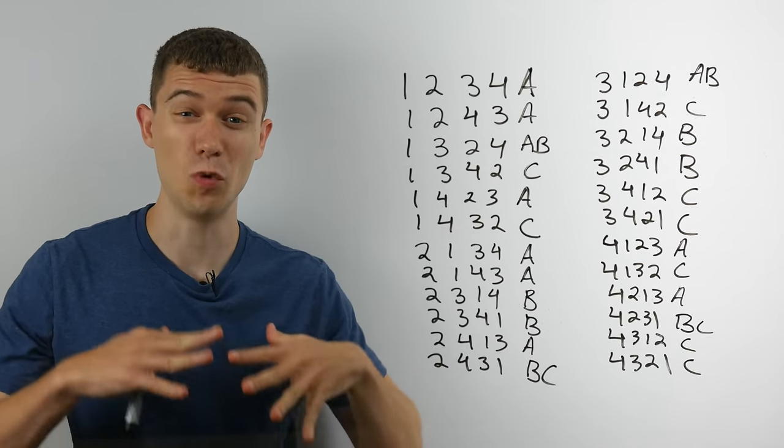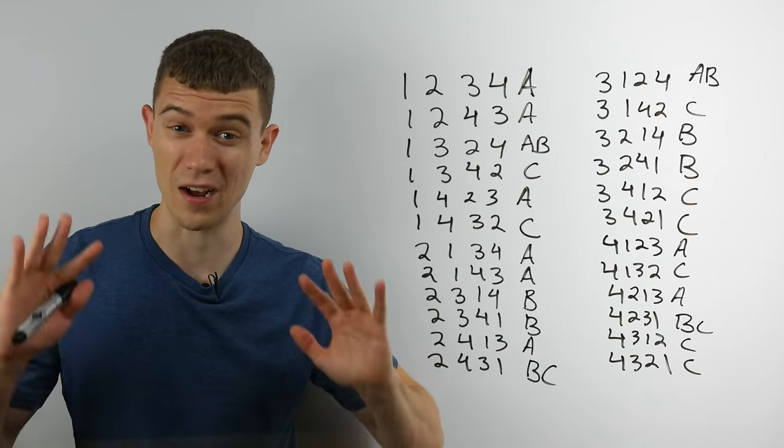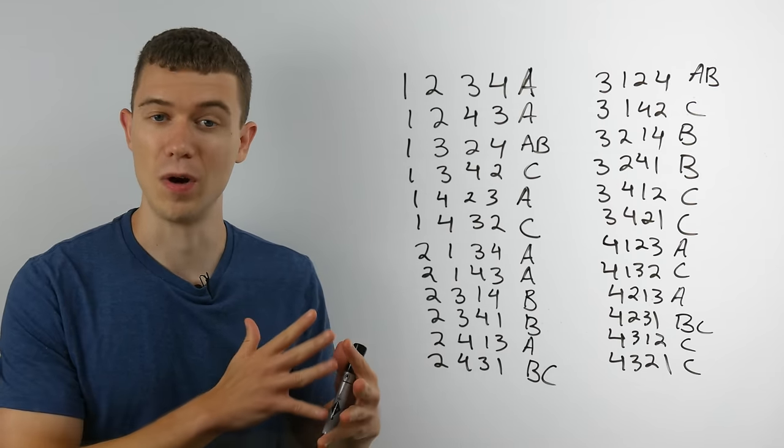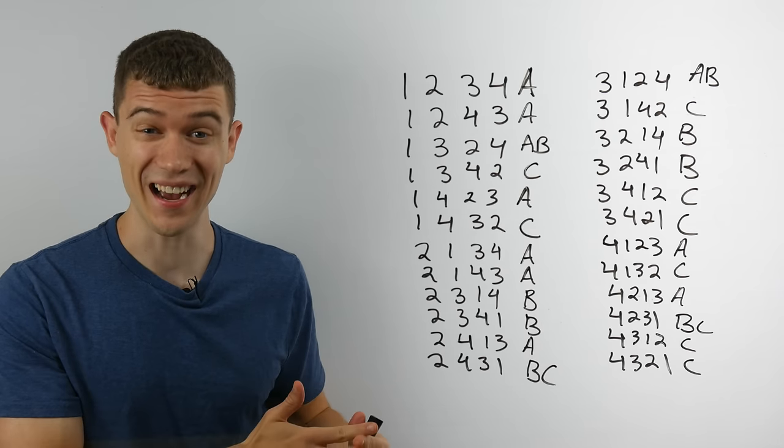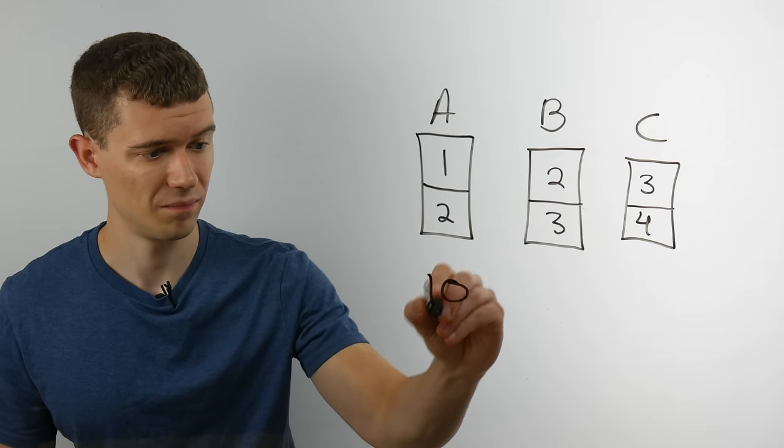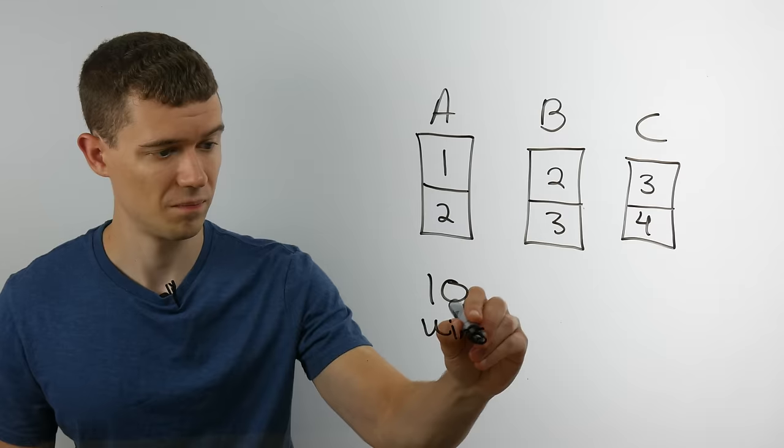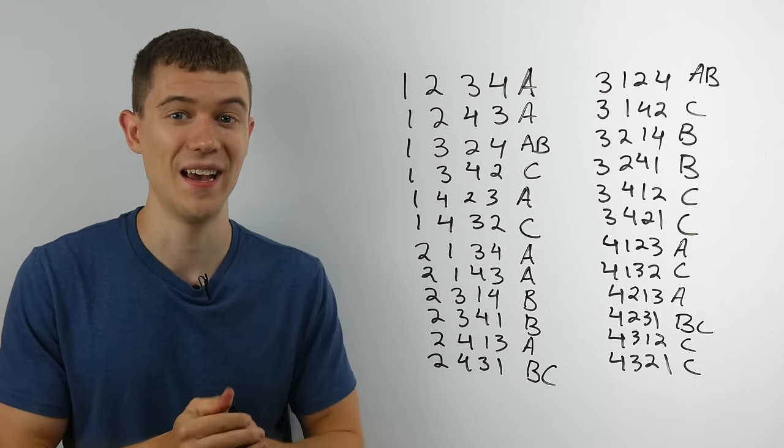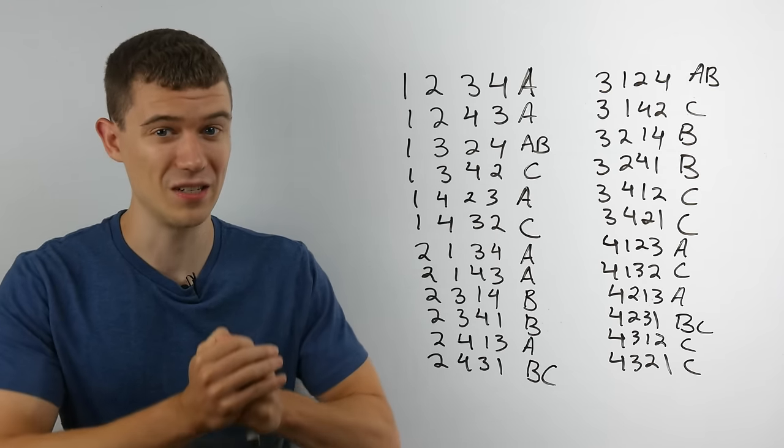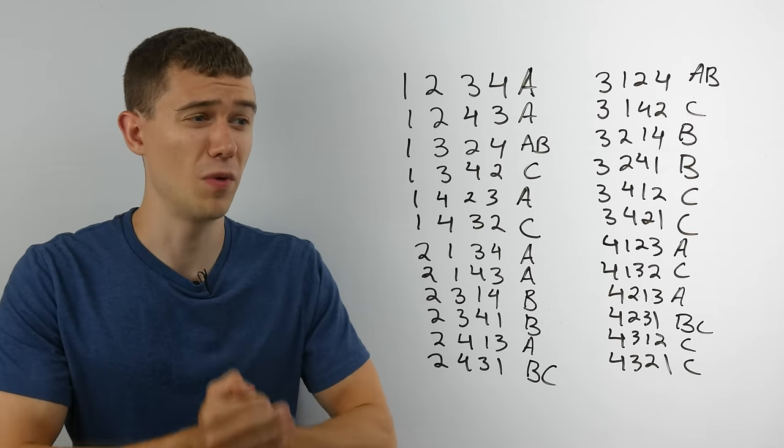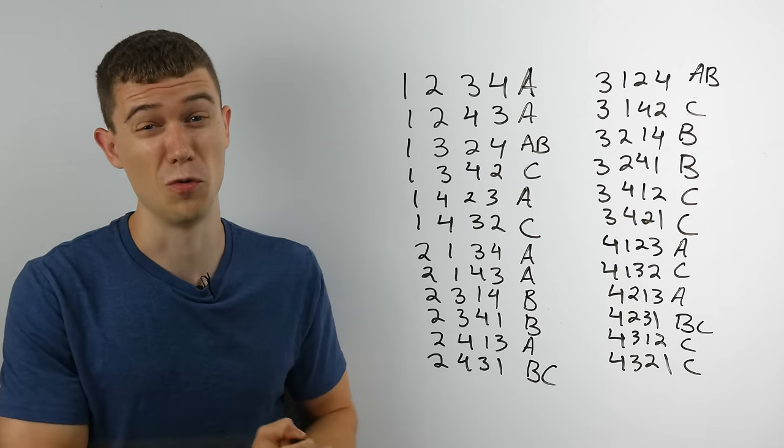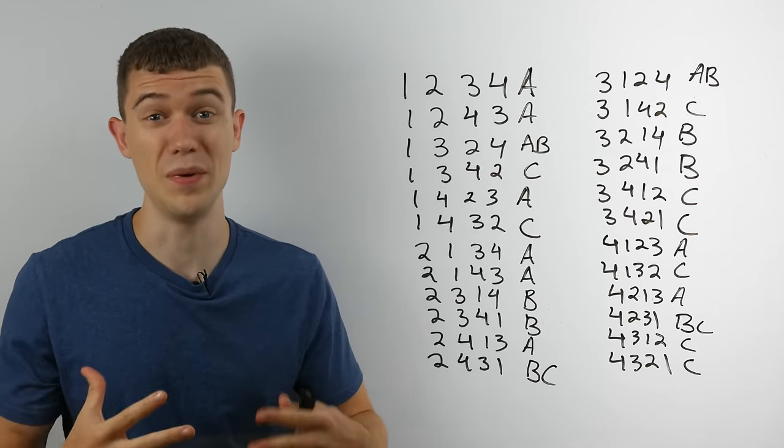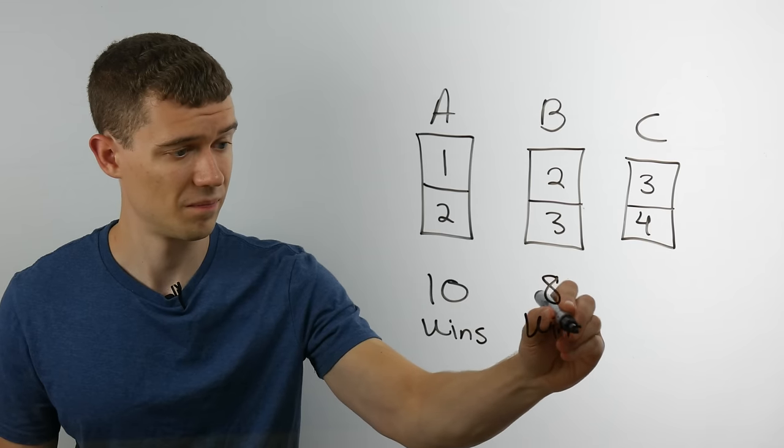You'll see that both A and C won eight rounds flat out. But they also had rounds where they won because they tied. So if you want to count ties as a win, which we're going to here, then A and C both won 10 times. Whereas the B card, well, the B card only won four rounds right out and won four rounds because of ties. So the B card only won eight rounds.